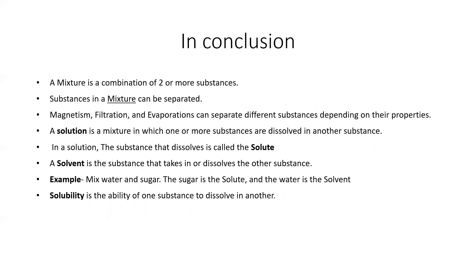In conclusion: a mixture is a combination of two or more substances, and substances in a mixture can be separated. Magnetism, filtration, and evaporation can separate different substances depending on their properties. A solution is a mixture in which one or more substances are dissolved in another substance. The substance that dissolves is called the solute, and the solvent is the substance that takes in or dissolves the other substance. For example, when mixing water and sugar, the sugar is the solute because it dissolves into the water, and the water is the solvent. Solubility is the ability of one substance to dissolve in another.